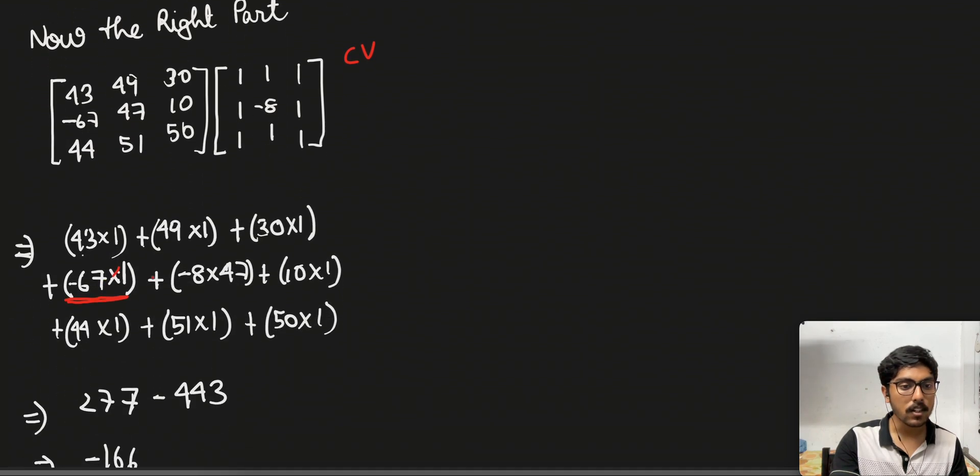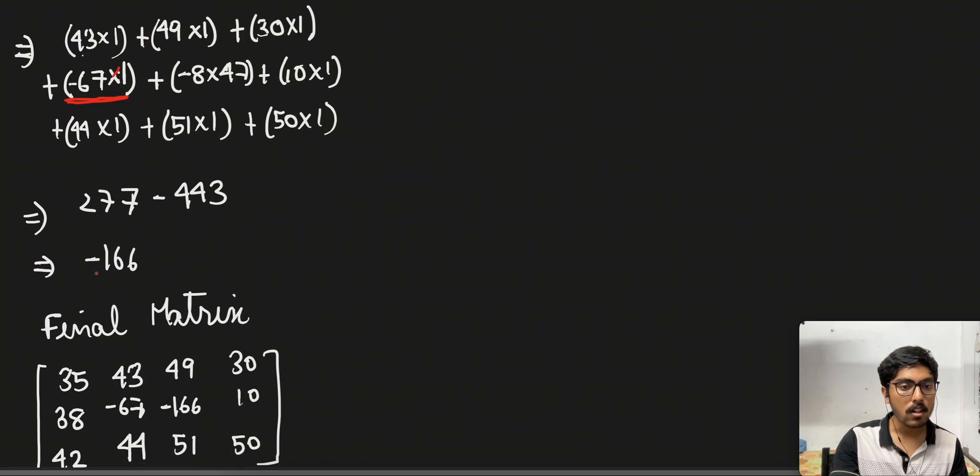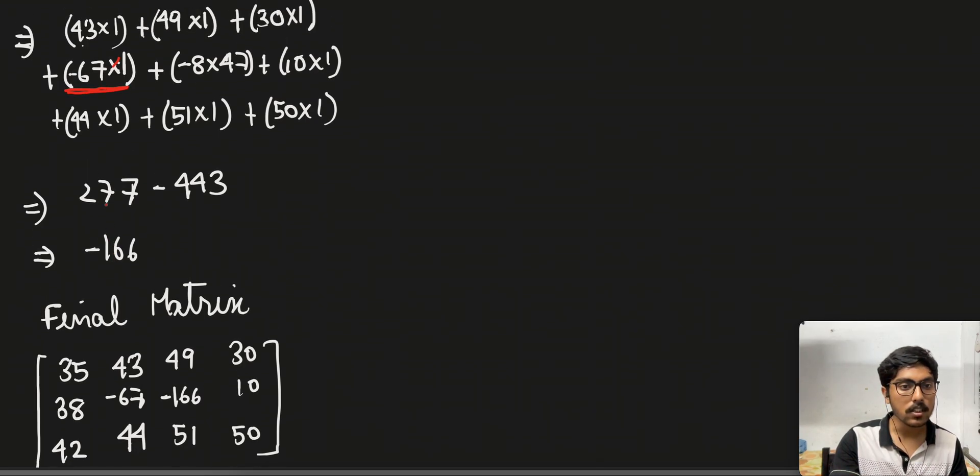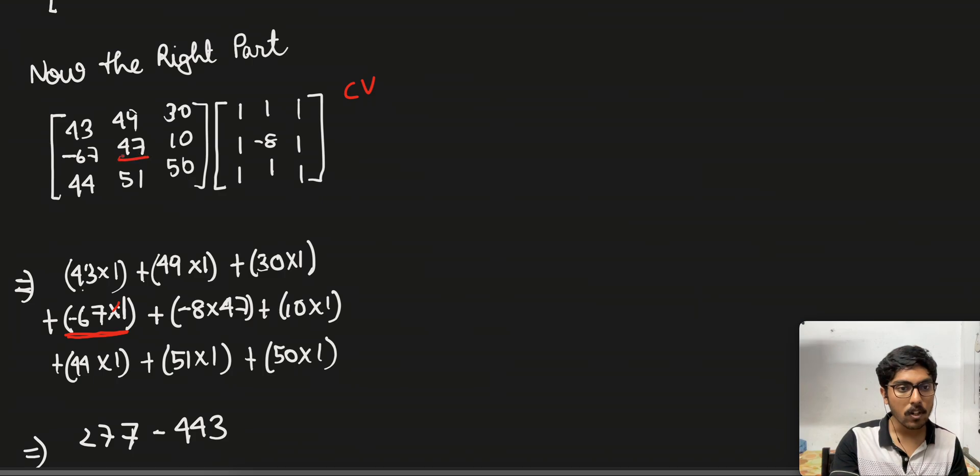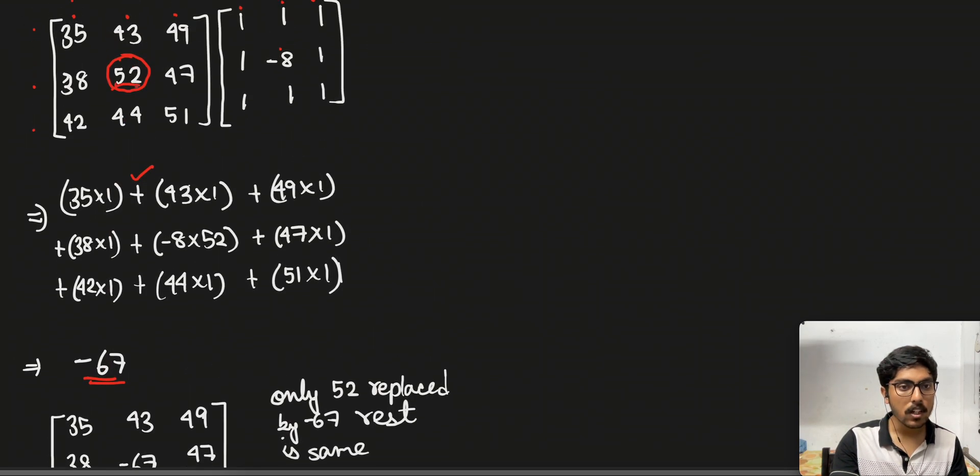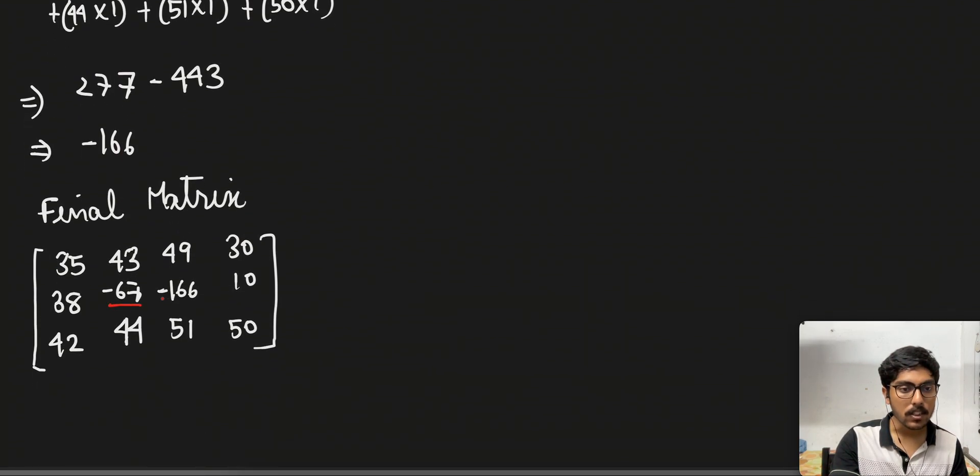So what we get out of here is minus 166. So what we will do is just change these two values, that is 47 in here and 52 in the left matrix, and then we will get the final matrix to be this.